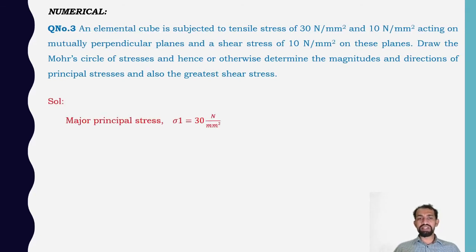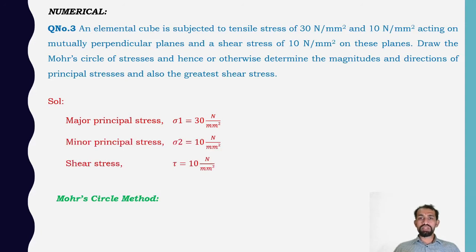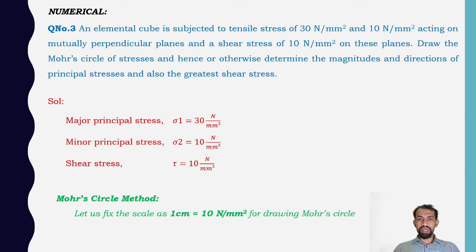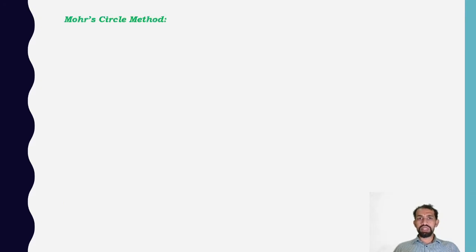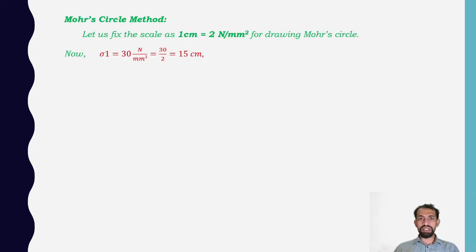Given data: major principal stress sigma1 = 30 N/mm², sigma2 = 10 N/mm², and tau = 10 N/mm². For the Mohr circle method, let us fix the scale. Initially we consider 1 cm = 10 N/mm², so sigma1 would be 15 centimeters in that scale.